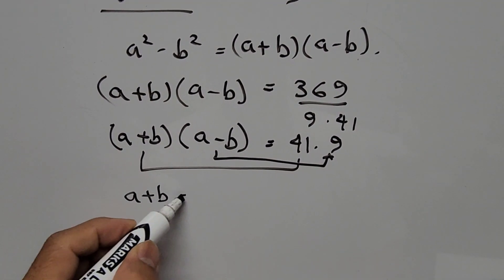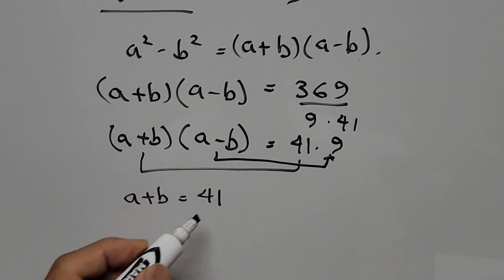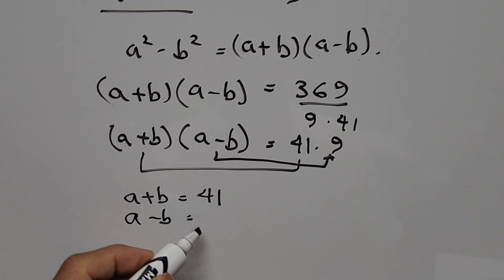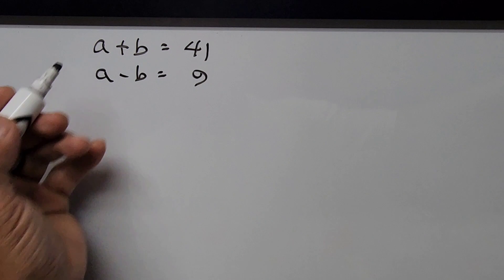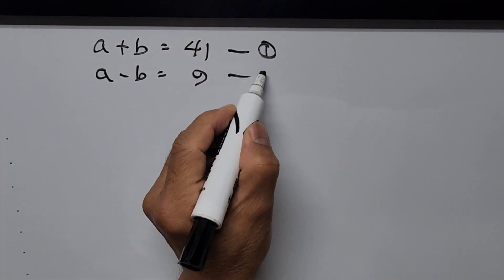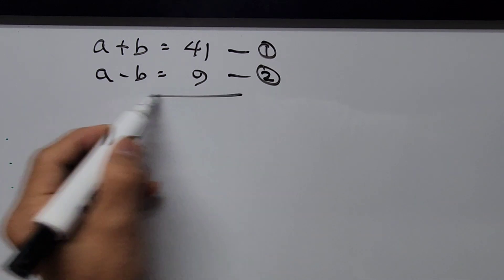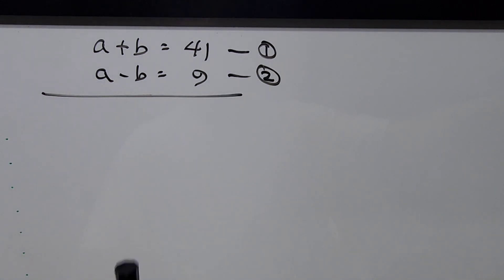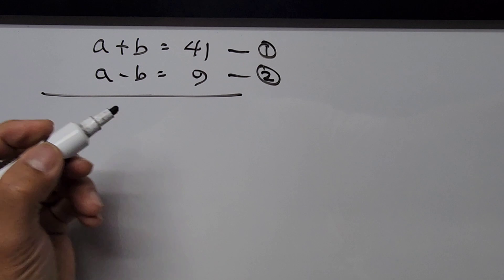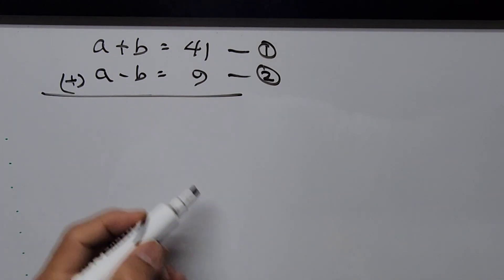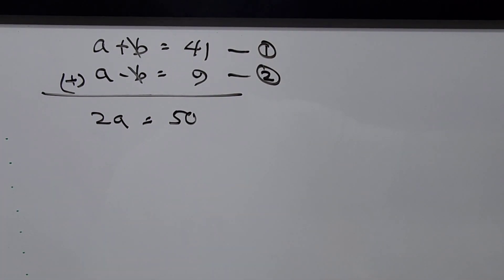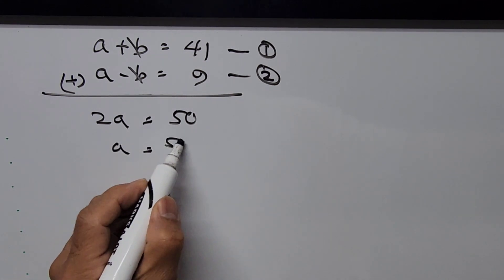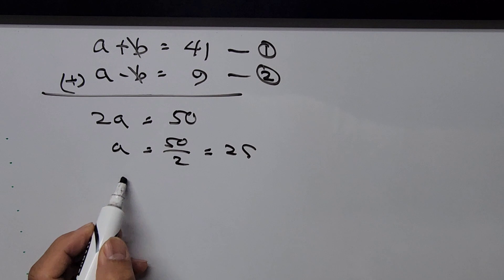So we now have two equations: equation 1 is a plus b equals 41, and equation 2 is a minus b equals 9. Since b has opposite signs in the two equations, we can add them to cancel b. We get 2a equals 50, so a equals 50 over 2, which is 25.